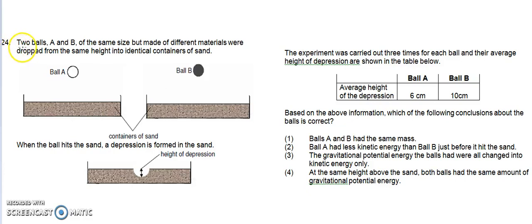Question 24: Two balls, A and B, of the same size but made of different materials, were dropped from the same height into identical containers of sand. We have two containers of sand with ball A and ball B.